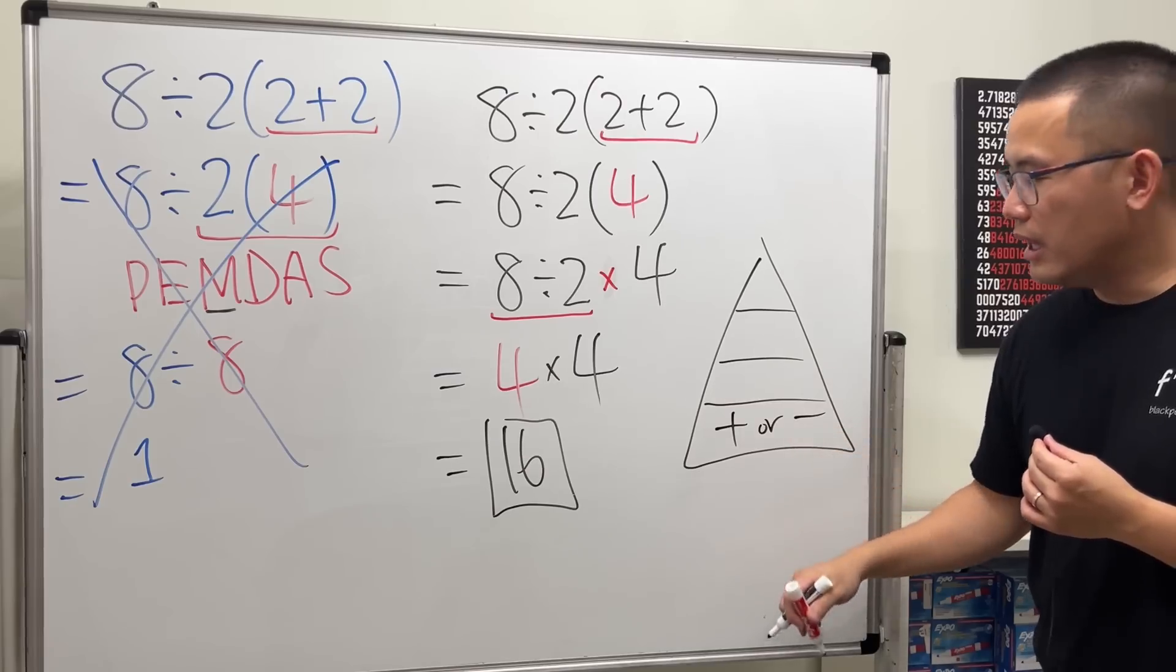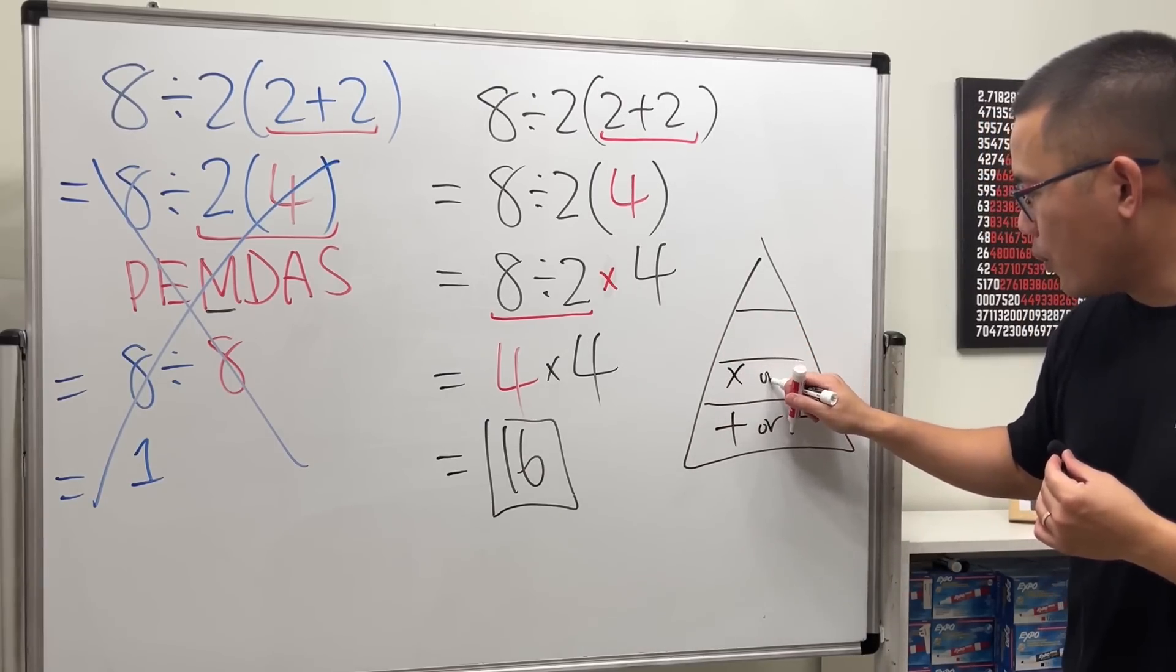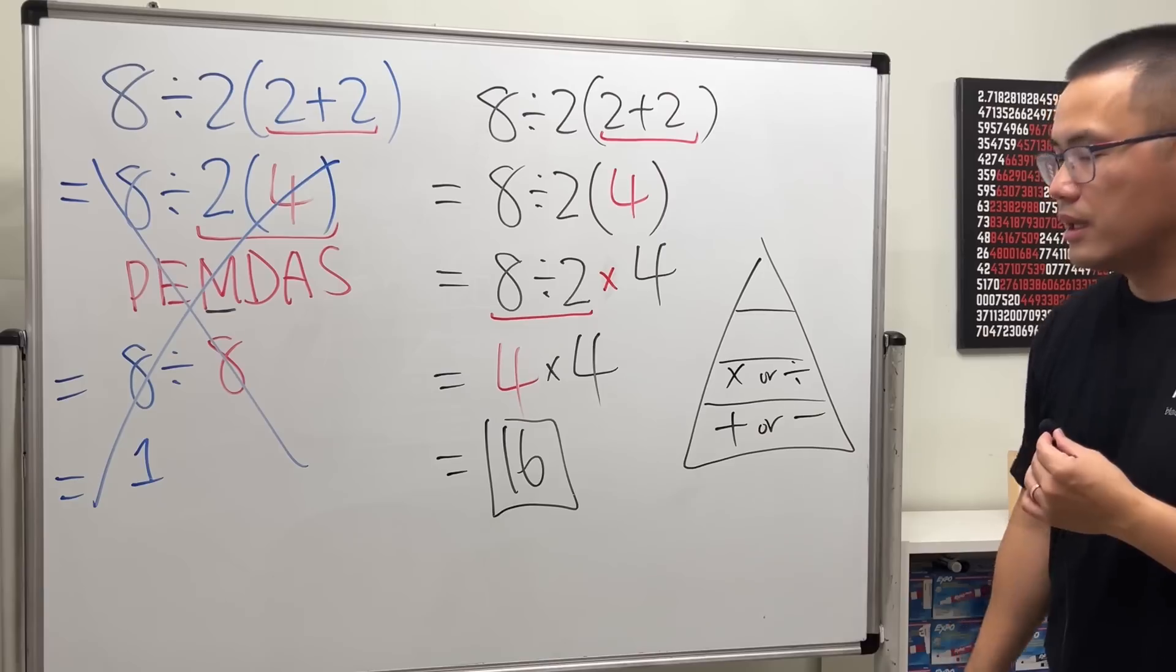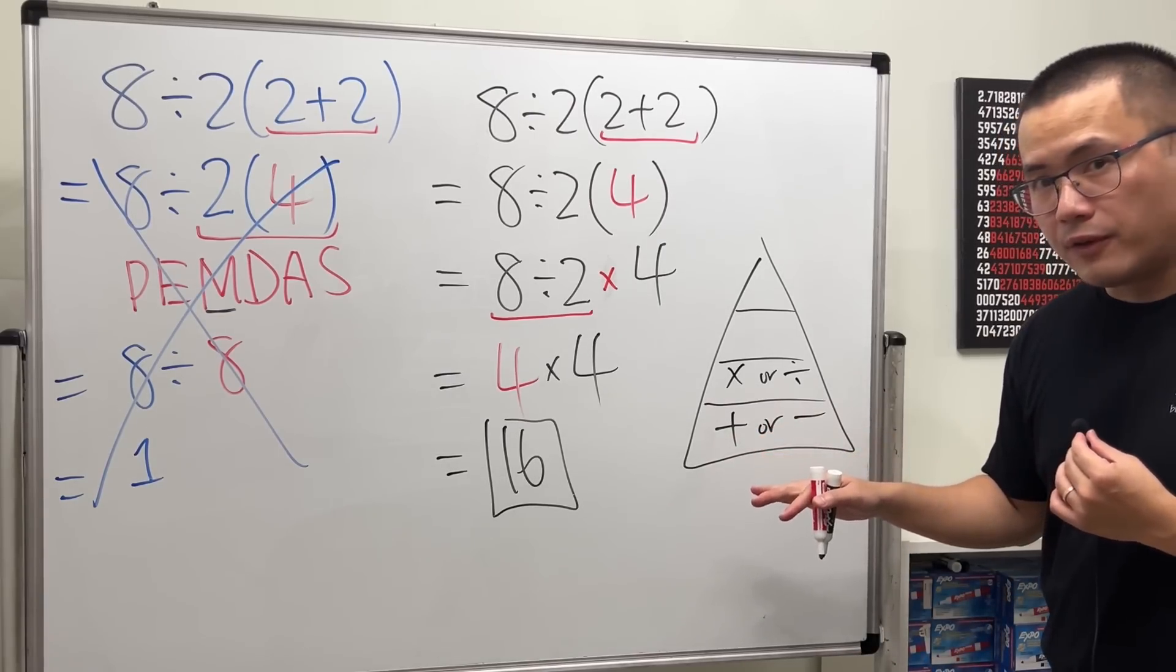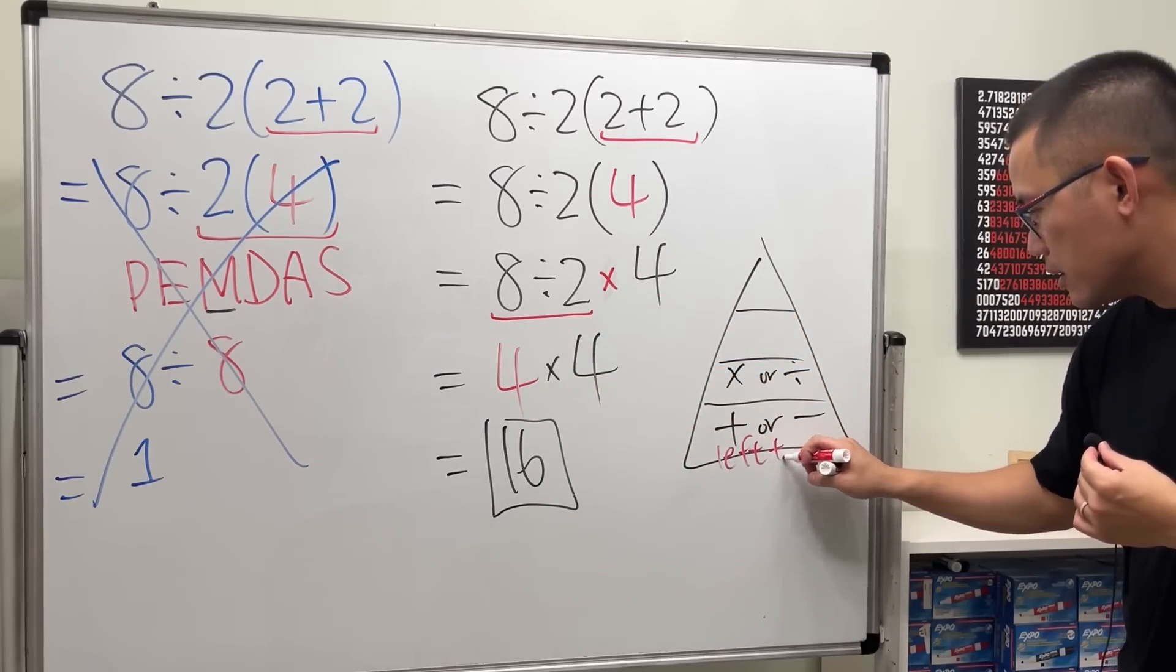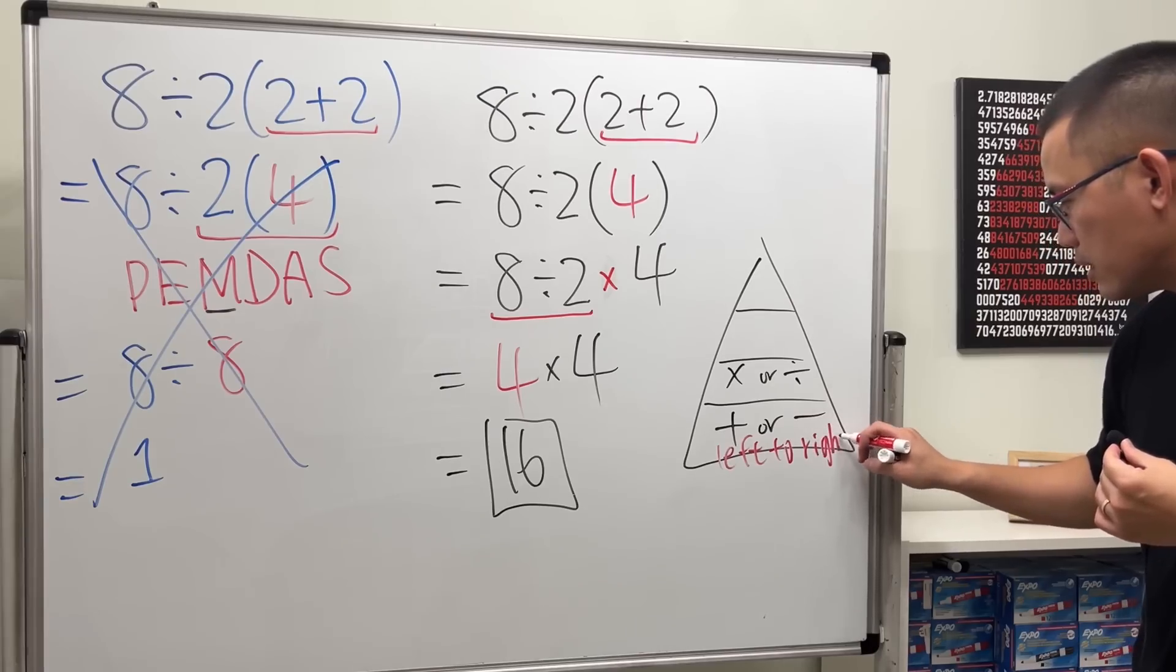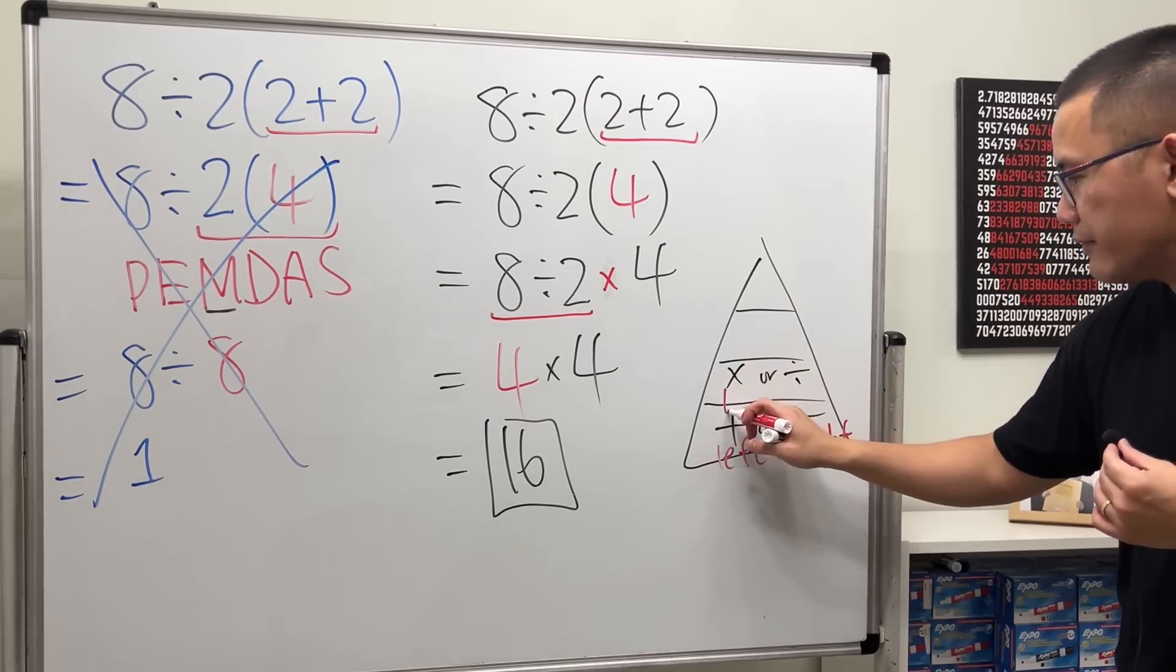Now see, this and that—if they are on the same level, if you see them together, then you do it from left to right. Likewise, multiplication or division, you do it from left to right.